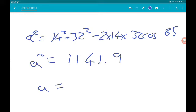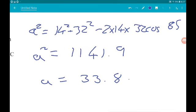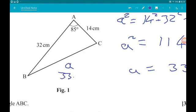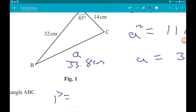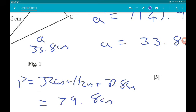Now that's centimeters, so now we know this is 33.8 centimeters. The perimeter is 32 plus 14 plus 33.8, which gives us 79.8 centimeters.